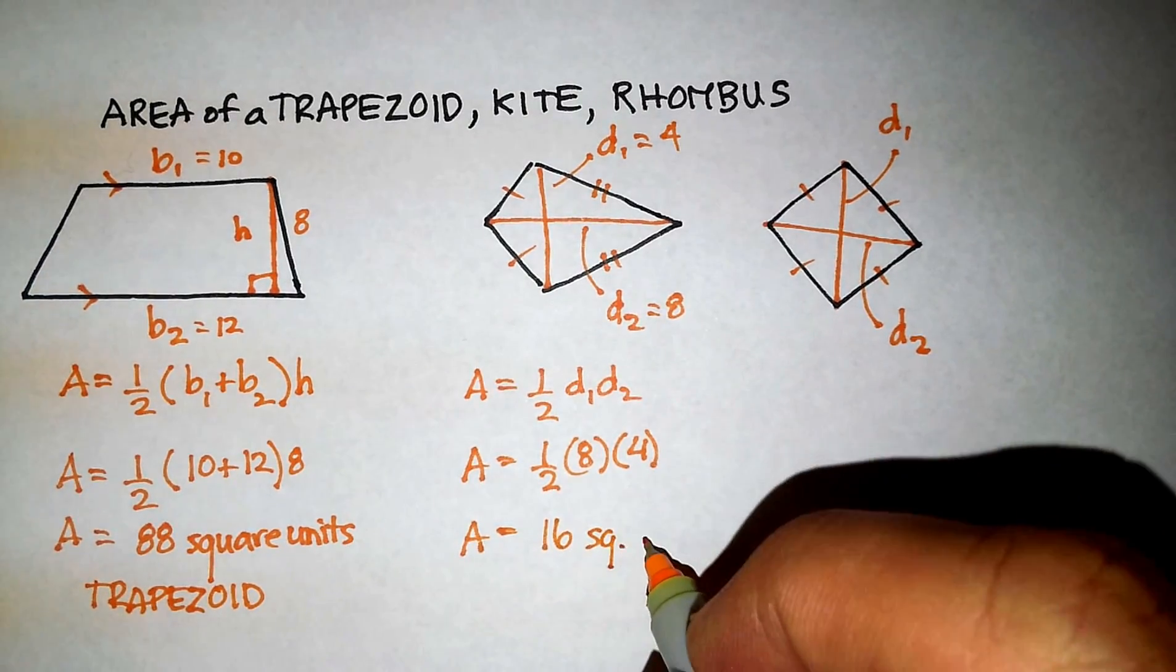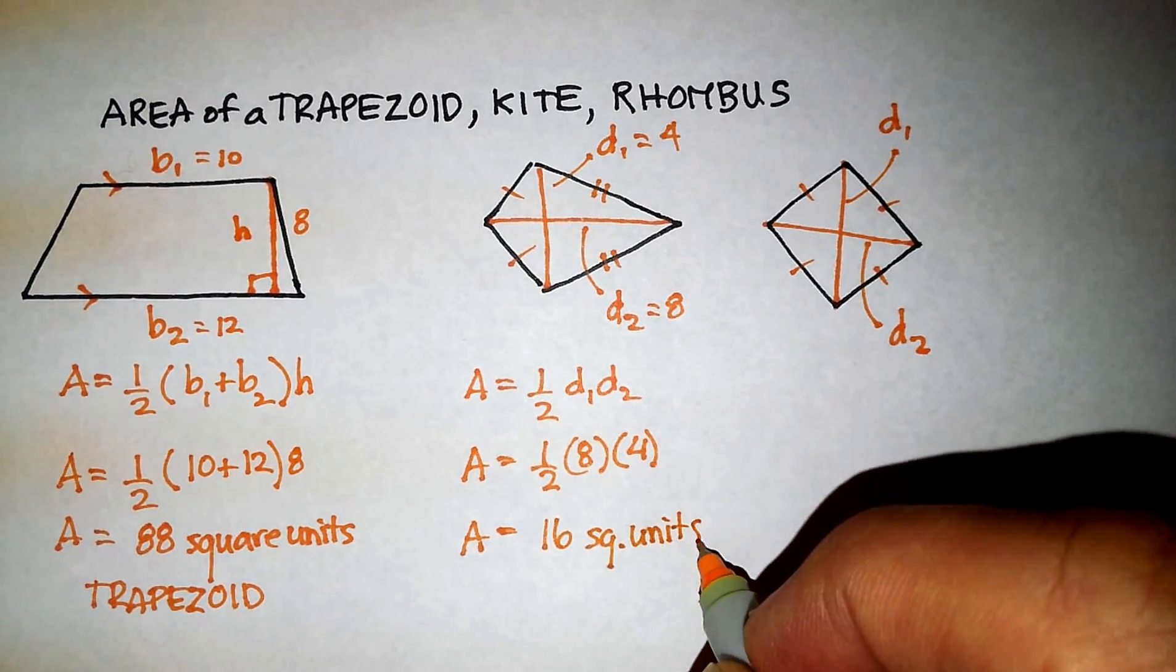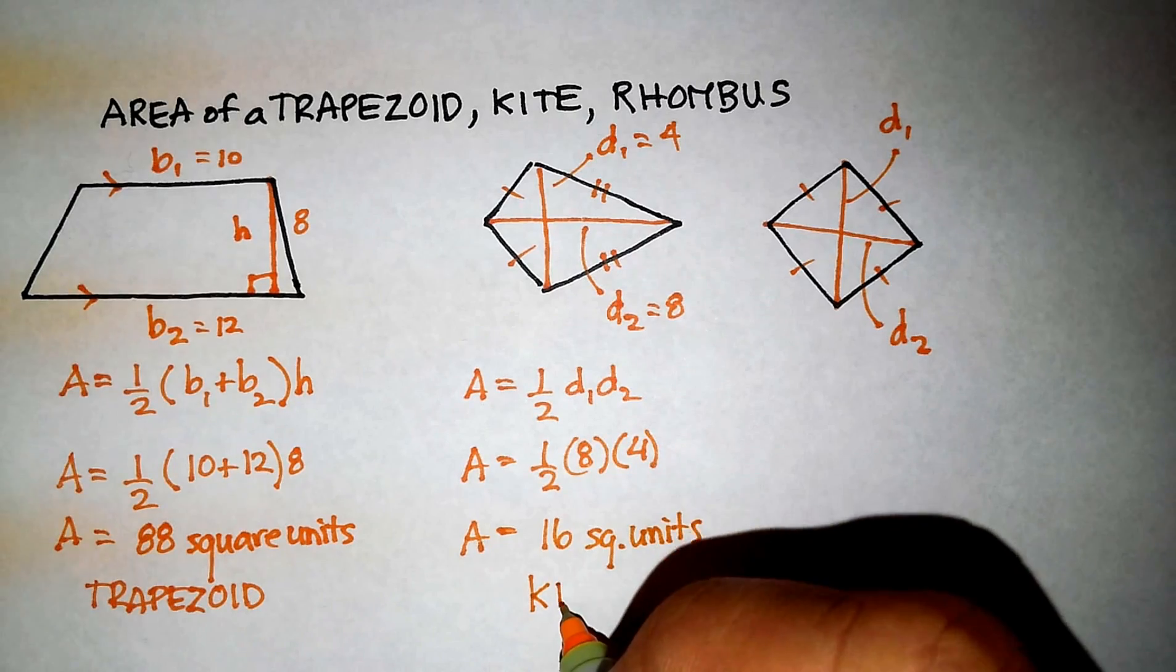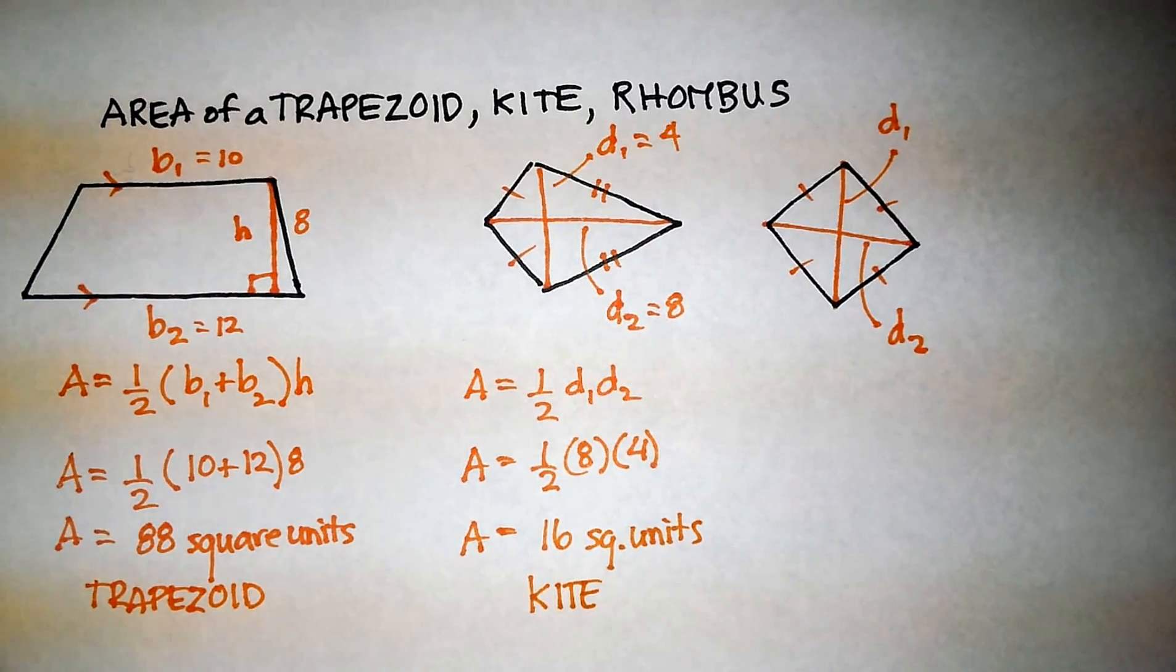And again, square units. And again, that is the area for a kite. Now here's the bonus.